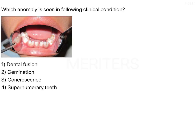We have an image-based question here, and the question is: which anomaly is seen in the following clinical condition? We have an image of a child. The central incisor is present, and the lateral incisor is merged with the canine on both sides, followed by D and E. These are primary teeth.